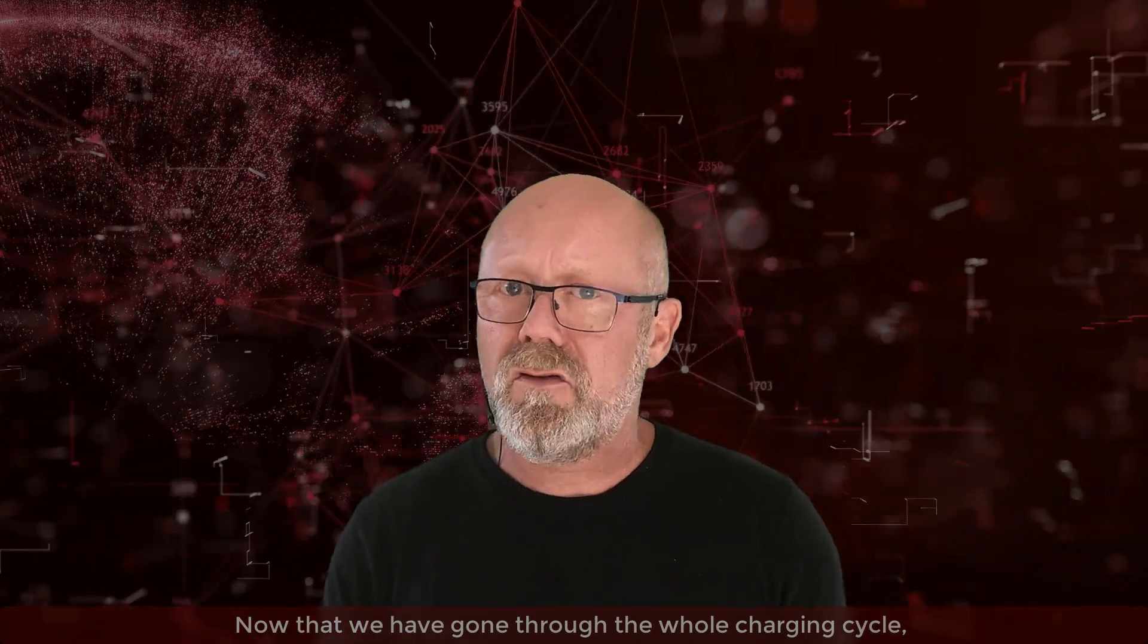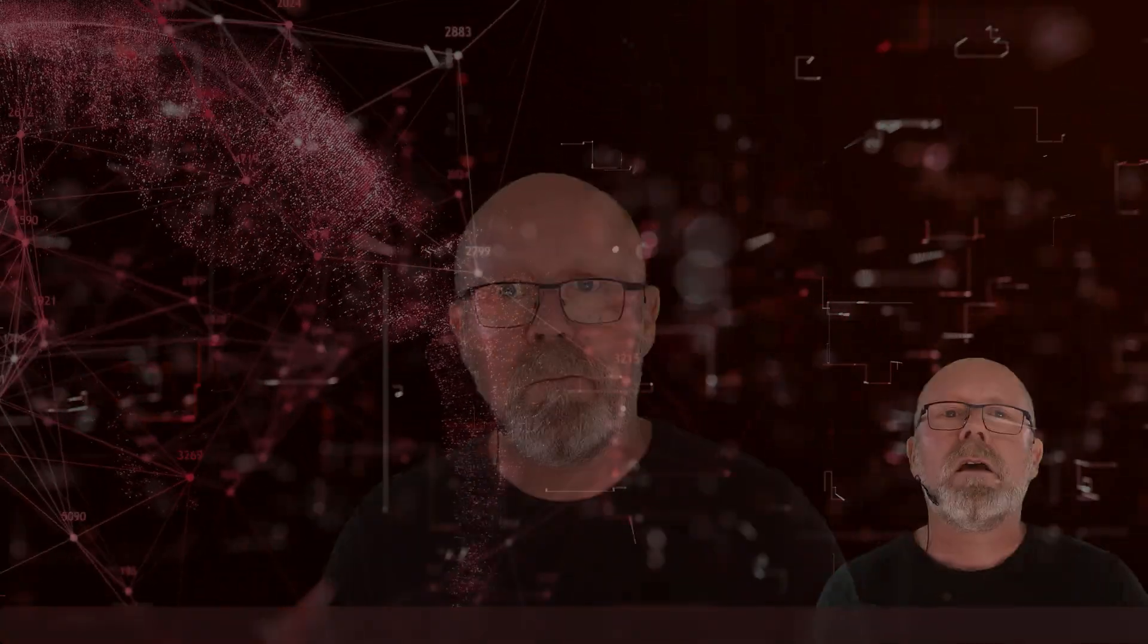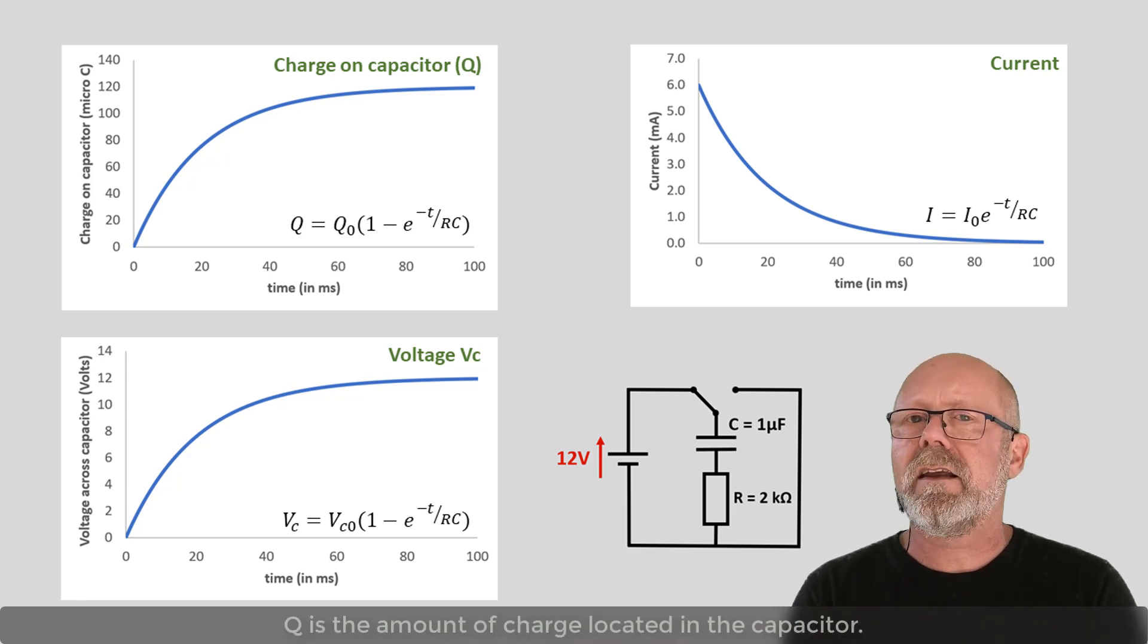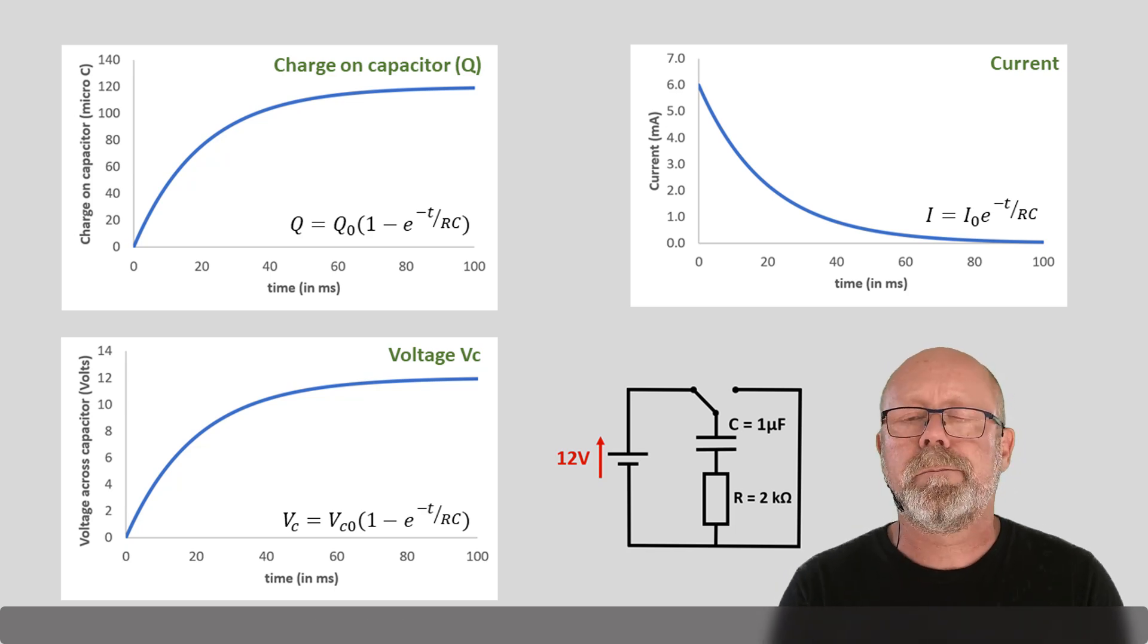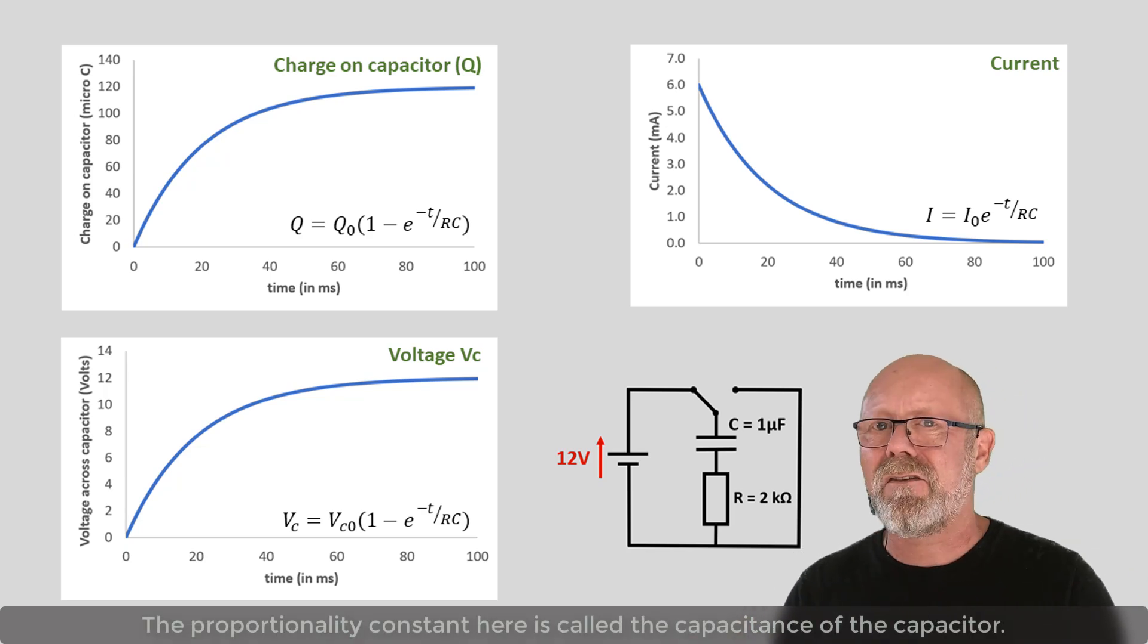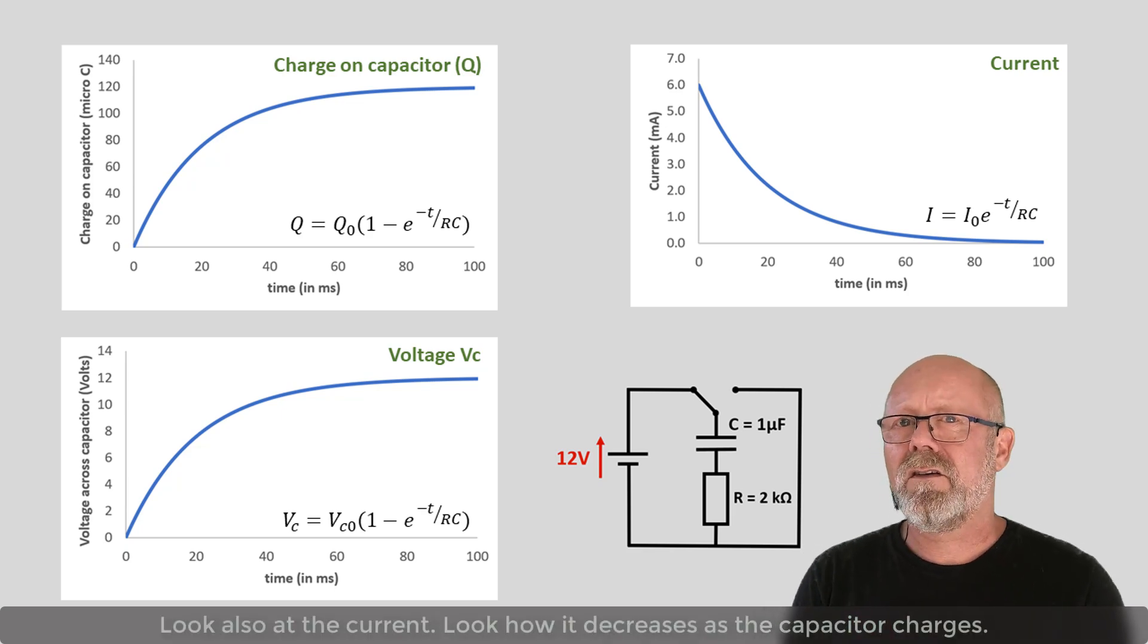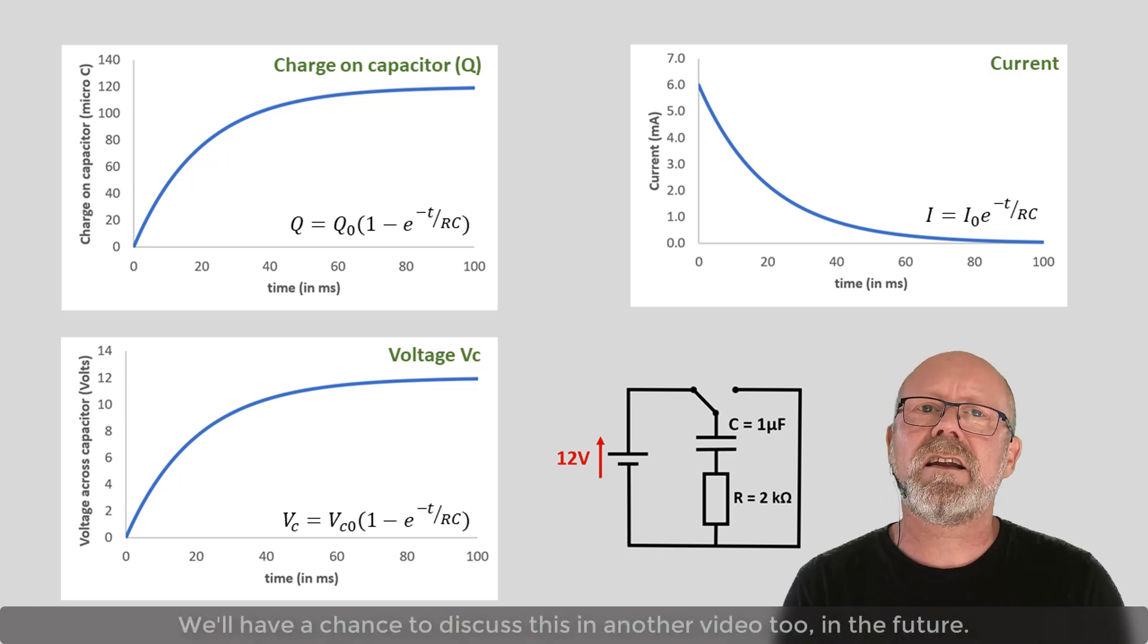Now that we have gone through the whole charging cycle, let's have a quick look at the evolution of some of the circuit's parameters in time. Vc is the potential drop across the capacitor. Q is the amount of charge located in the capacitor. And I is the current in the circuit, which is also Vr over R. Note that Q and V evolve exactly the same way. Q and V are actually proportional. The proportionality constant here is called the capacitance of the capacitor. We'll discuss this in a future video. Look also at the current. Look how it decreases as the capacitor charges. Note also that these are exponential curves. We'll have a chance to discuss this in another video in the future.